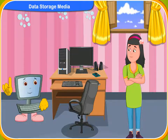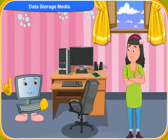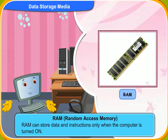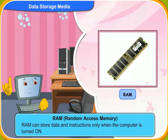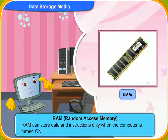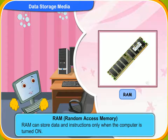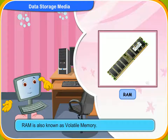Since you already know that the primary memory is the RAM and ROM, let me tell you more about them. The full form of RAM is random access memory. RAM can store data and instructions only when the computer is turned on. You can read and write data on this temporary memory. If the power suddenly goes out, all the data stored on it is lost. So RAM is also known as volatile memory.